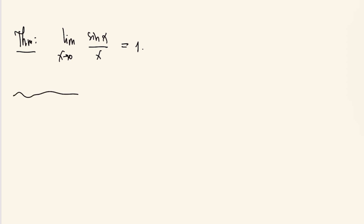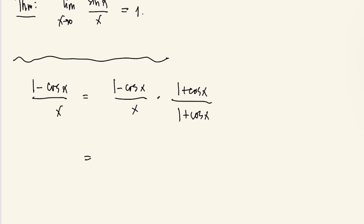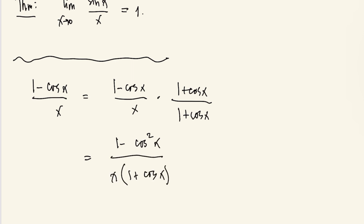Now, we are interested in this expression: 1 minus cosine x over x. If we multiply by the conjugate of the numerator, which is 1 plus cosine x all over 1 plus cosine x, we get 1 minus cosine squared x all over x times 1 plus cosine x. By trigonometry, 1 minus cosine squared x is equal to sine squared x.